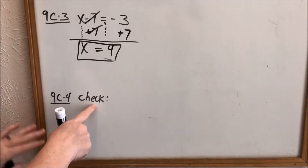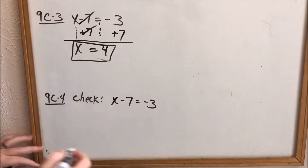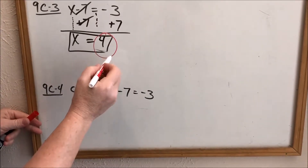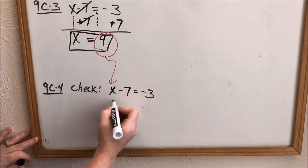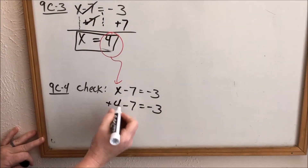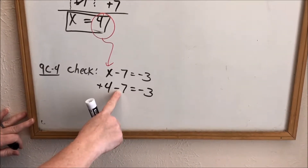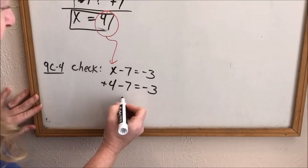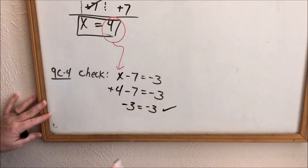Then when you go to check it — 9C number four — I recommend rewriting your original equation. We said X is 4, so everywhere I see an X I replace it with 4. I write 4 minus 7 equals negative 3. That's a positive 4 — when there's no sign, that's an implied positive. You have 4, you owe 7, so you still owe 3, which is what the right side equals. The left side equals the right side — it checks.